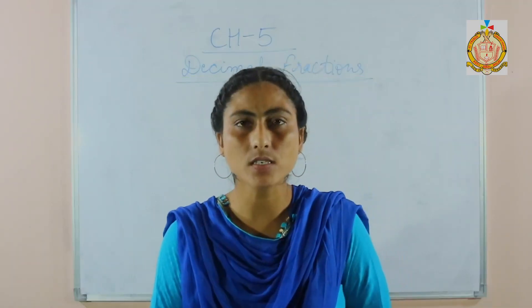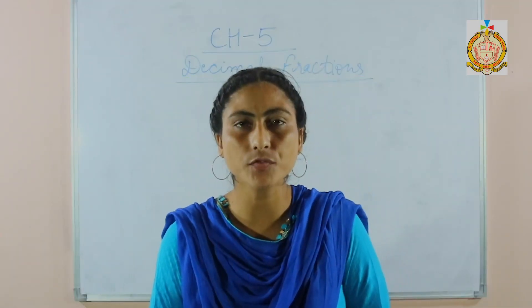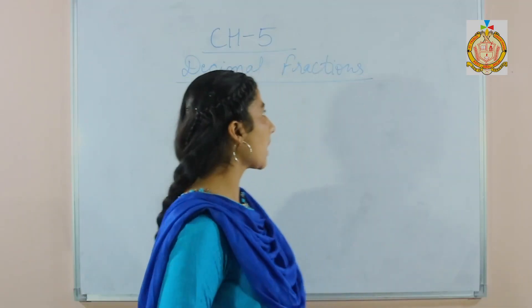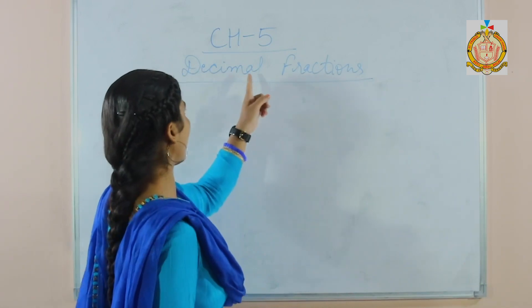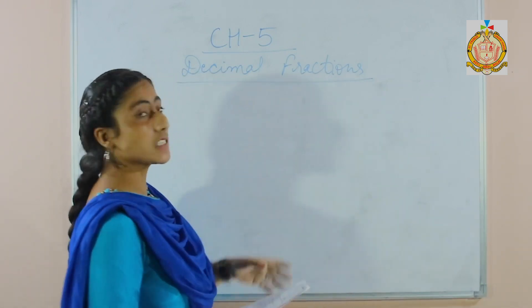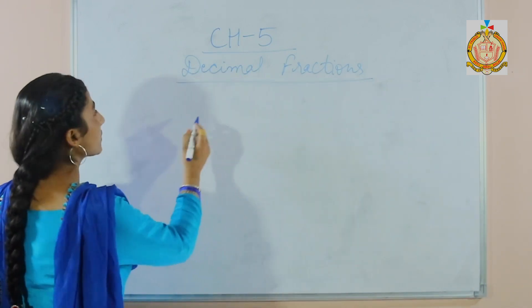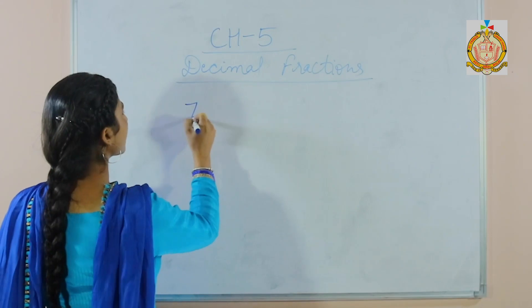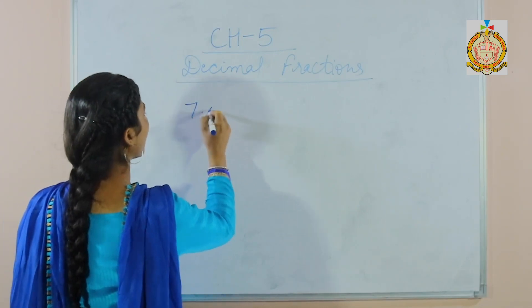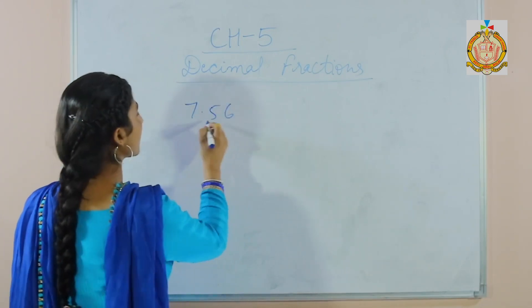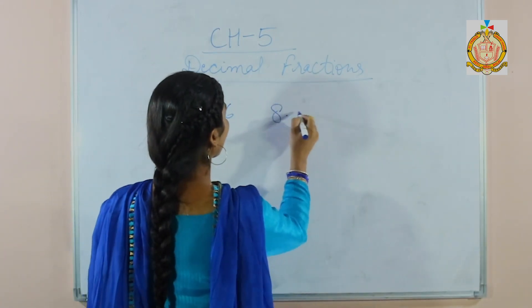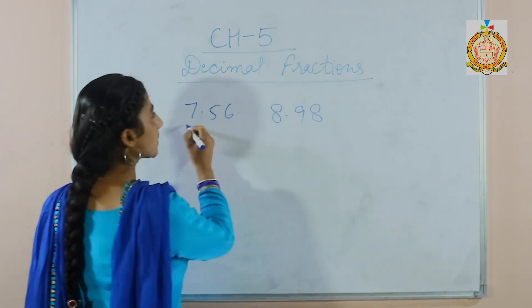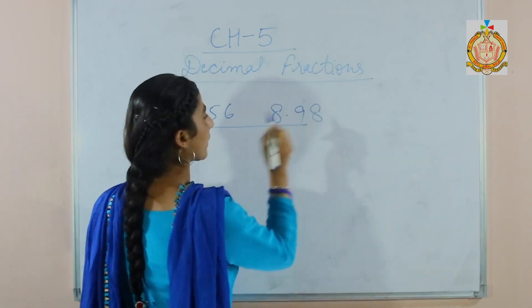Good morning students. Welcome to 5th math class. Today we will start chapter number 5: Decimal Fractions. Students, what are decimal fractions? The numbers having a decimal point — for example 7.56, 8.98. These numbers are called decimal fractions.